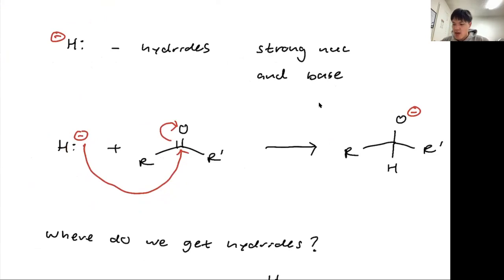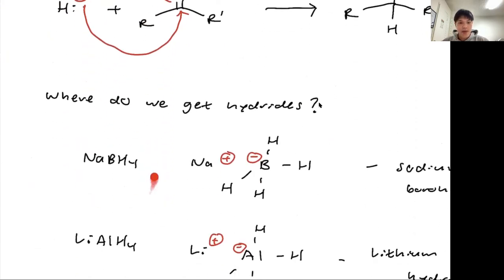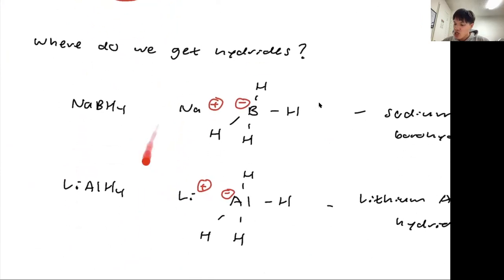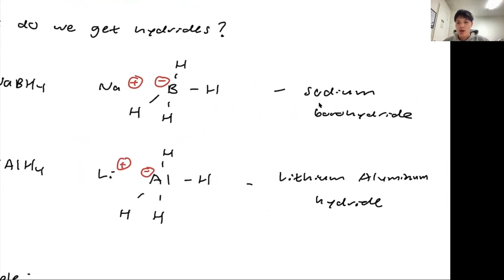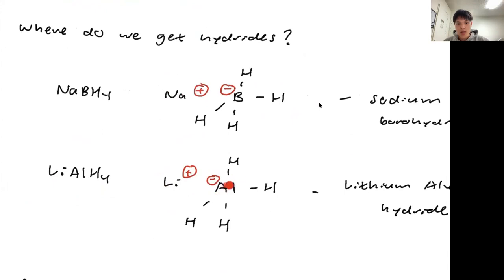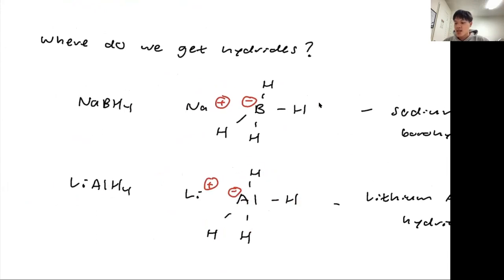So where do we get these hydrides? Because these hydrides are extremely explosive - if you work with them in the lab, they will blow up. They're usually found under NaBH4 or LiAlH4. I've drawn their structure here. It's a boron with four hydride hydrogens - so this has four hydrides. This boron is negatively charged and it's being shielded by the sodium. Same thing with this aluminum with the lithium. NaBH4 is called sodium borohydride, and LiAlH4 is called lithium aluminum hydride.